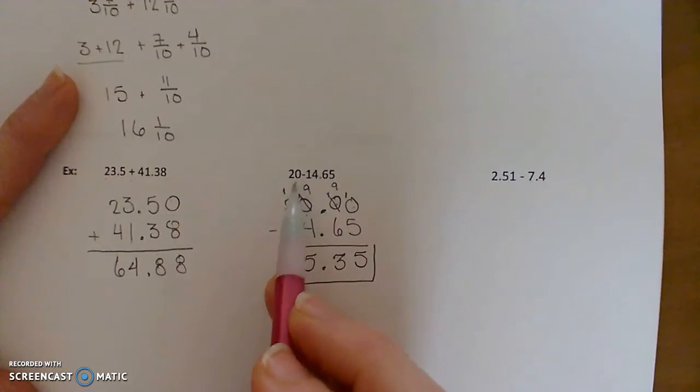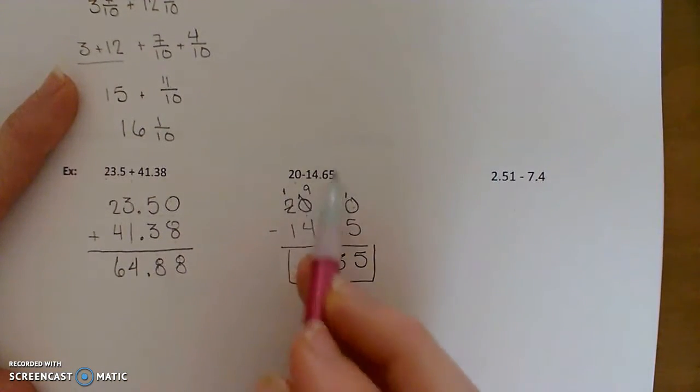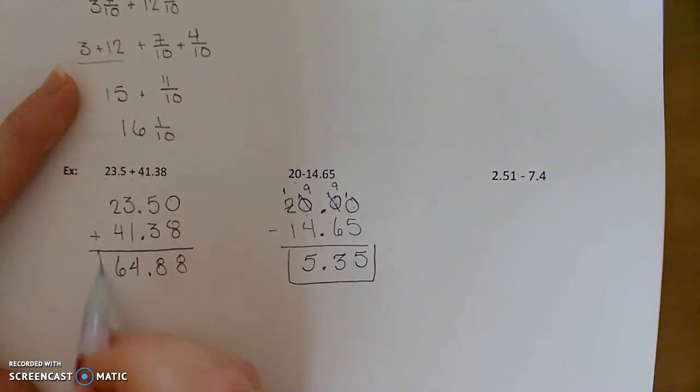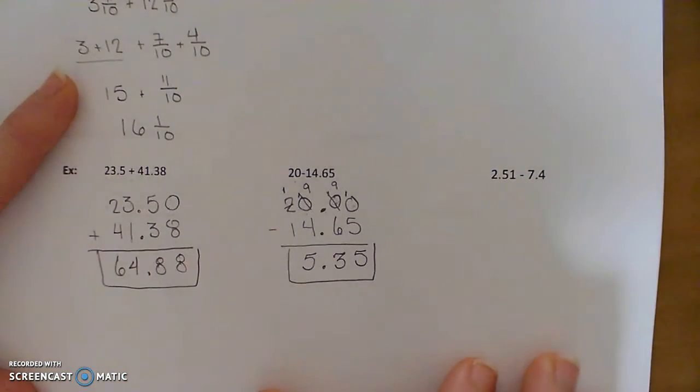So you should get something that's like approximately 5. Okay. I'm using some estimation to make sense of my numbers here.